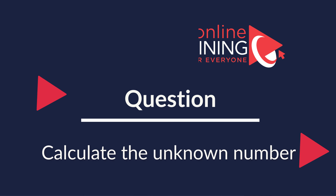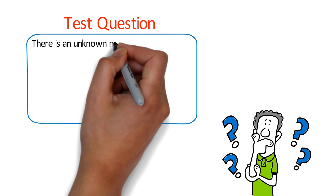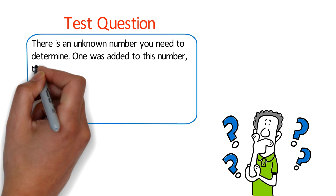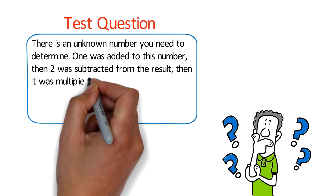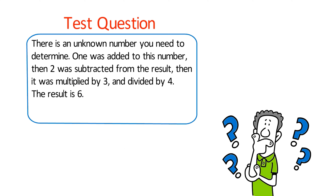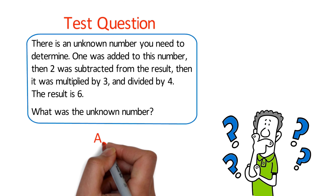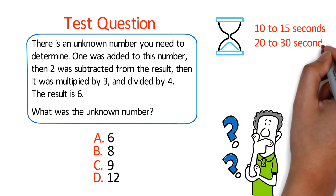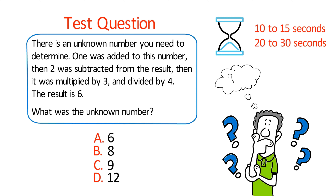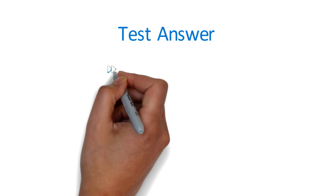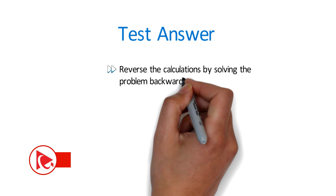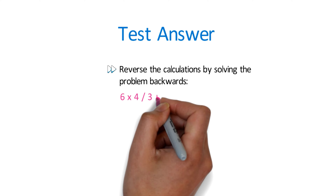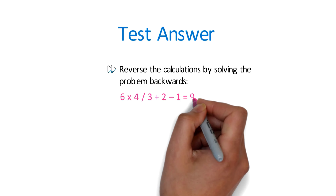Here's a simple question which frequently tests mental math capabilities. There is an unknown number — one was added, then two was subtracted, then it was multiplied by three, then divided by four, and the result is six. What is the unknown number? Choices: A) 6, B) 8, C) 9, D) 12. The best way to solve this is to reverse the calculation — working backwards: multiply 6 by 4, then divide by 3, add 2, and subtract 1. The result is 9.